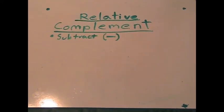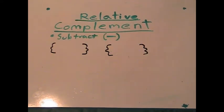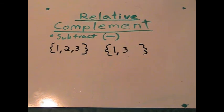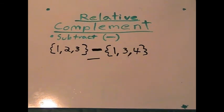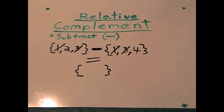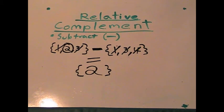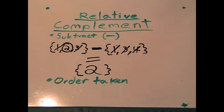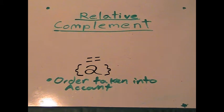Relative complement is used to subtract sets. For example, a set of 1, 2, and 3 subtracted by a set of 1, 3, and 4 cancels out to equal just a set of 2. But you must remember that order is taken into account as in all subtraction.